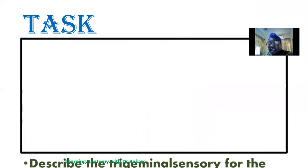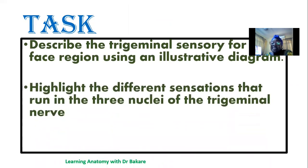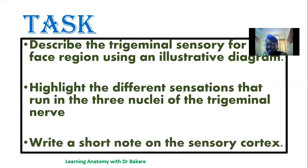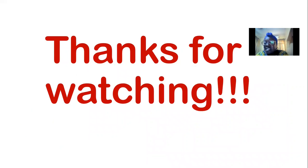Here is a task for us: describe the trigeminal sensory innervation of the face using an illustrative diagram; highlight the different sensations that run through the three nuclei of the trigeminal nerve; and write a short note on the sensory cortex — its location and function. Thanks for watching. I'll be expecting questions in the comment section. Let's meet in our next class.